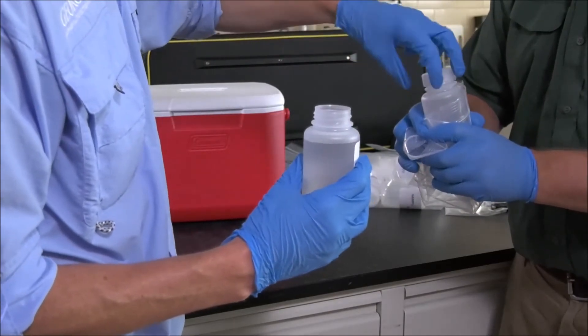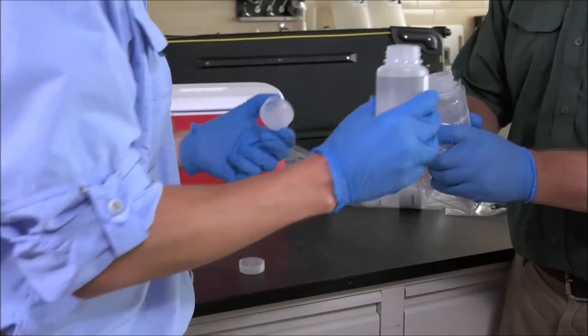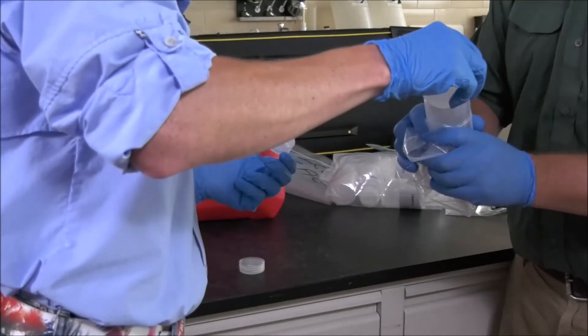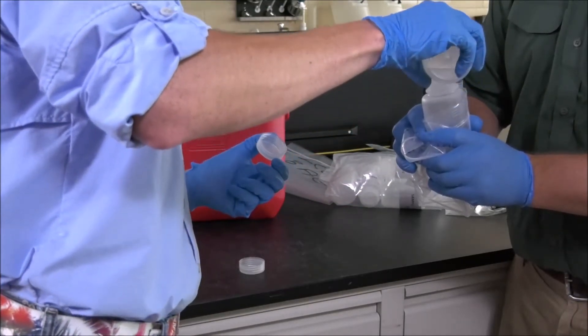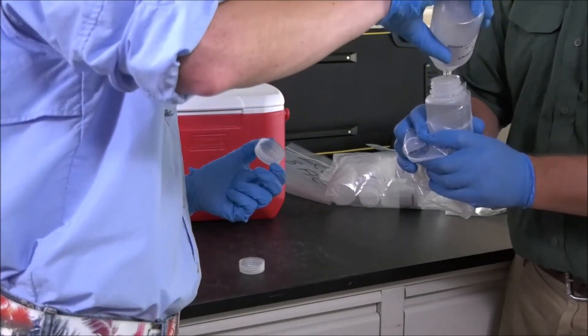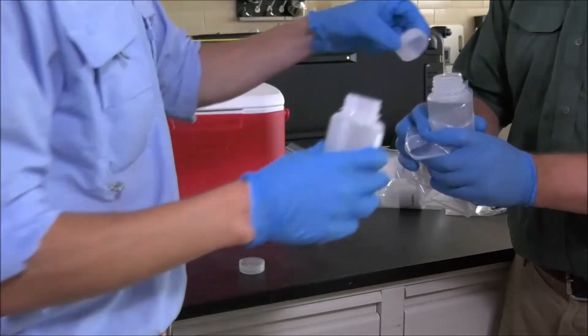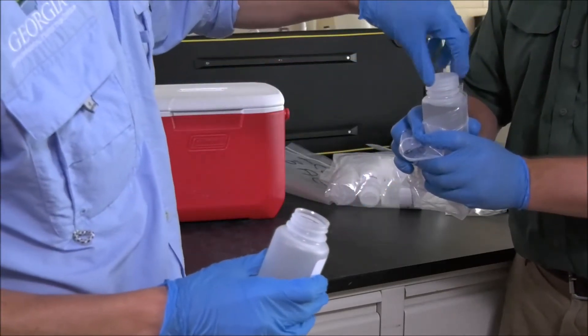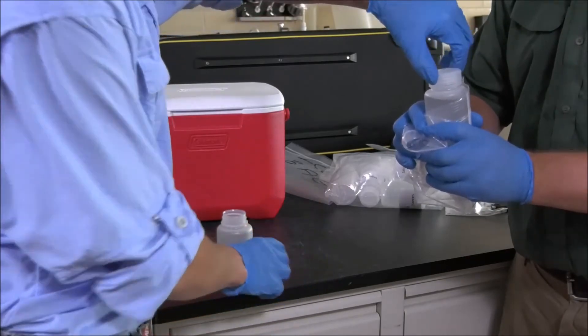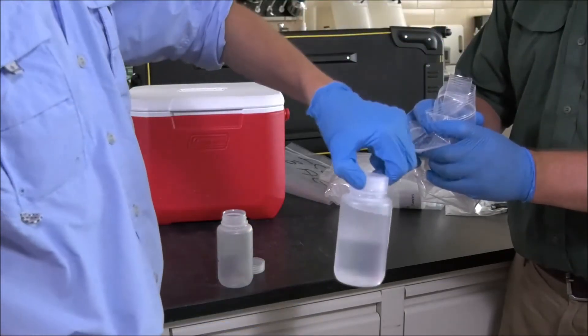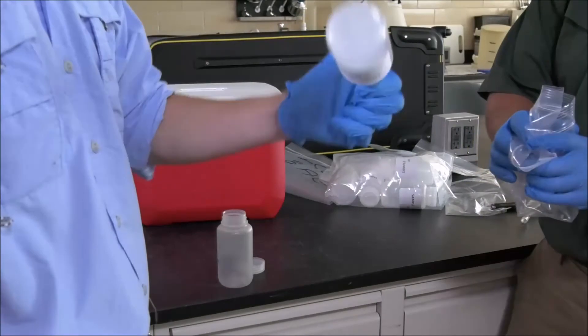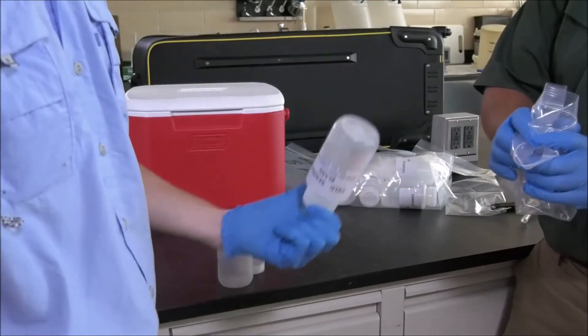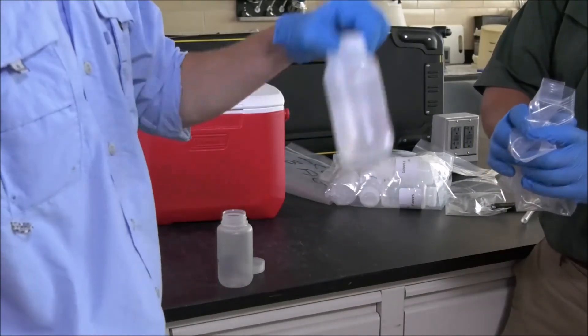Dirty hands will then move the empty field blank bottle to the opening. Clean hands will remove the cap and keep the cap in their hand while they pour the full field blank bottle into the empty field blank bottle being held by dirty hands. Clean hands will replace the cap on the field blank bottle, then remove the newly filled bottle from the plastic bag and mix the preservative with the field blank water by inverting the bottle at least five times.